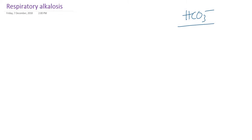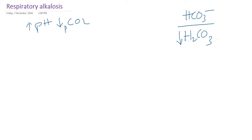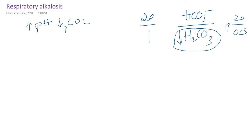What will happen in respiratory alkalosis? Consider the bicarbonate buffer. In respiratory alkalosis there is increase in the pH and decrease in the carbon dioxide. Decrease in the carbon dioxide means decrease in the acid component of the bicarbonate buffer, or carbonic acid. Normally the ratio is 20 to 1. If there is a decrease in carbonic acid — suppose it becomes 0.5 — the ratio will increase, maybe to 40 to 1, whereas normally it is 20 to 1. When the denominator decreases, the ratio increases.